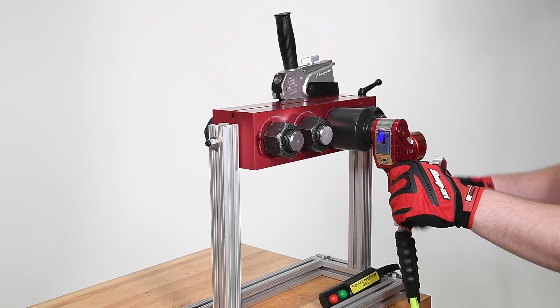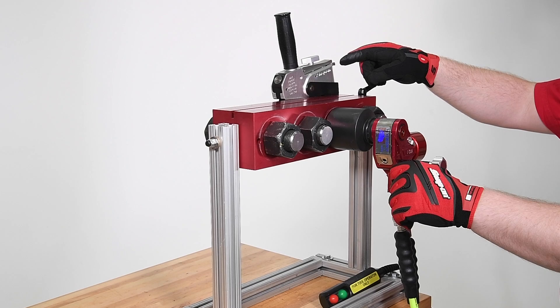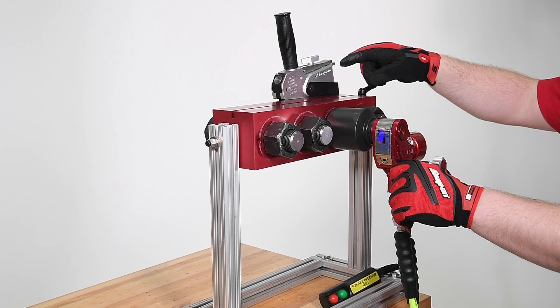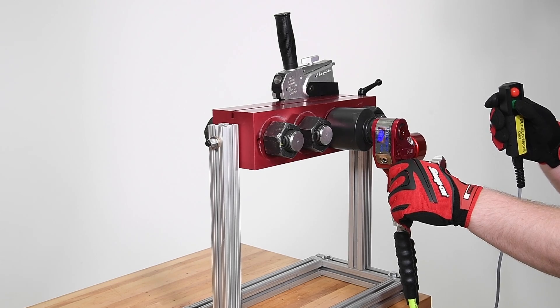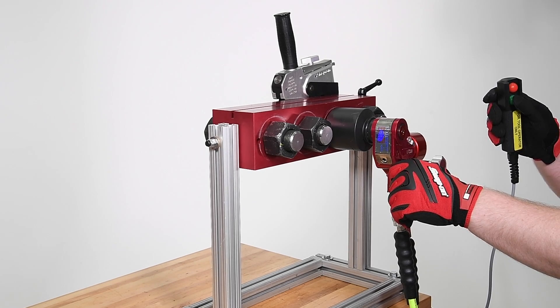You may need a backup wrench to keep the counter nut from turning. In this case, a hydraulic BTQ wrench is being used. With the HDQ and backup wrench in place and securely blocked, you can now start the hydraulic pump.